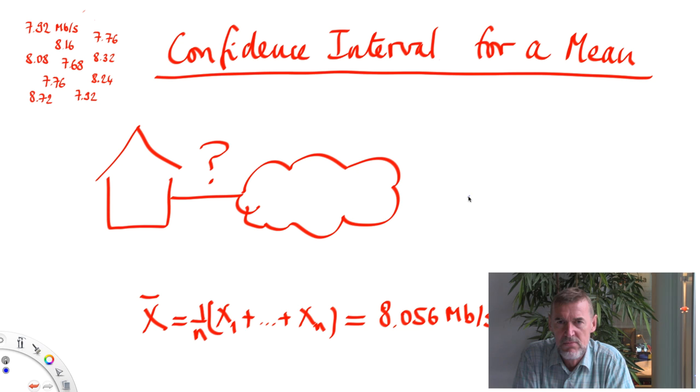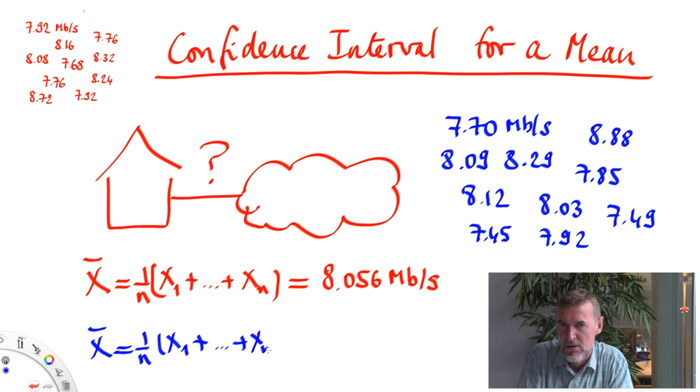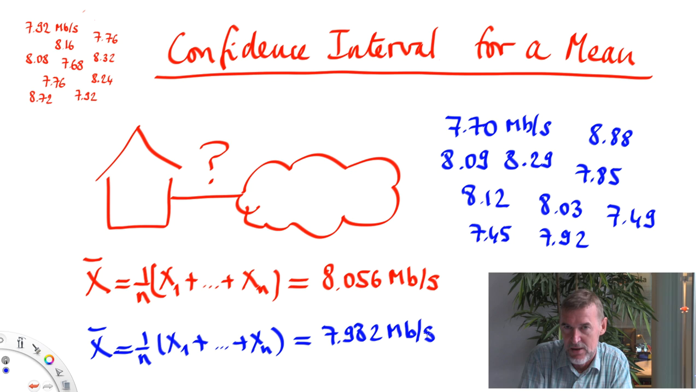If I do the experiment again in the same conditions, I find a different set of 10 numbers. We see that the result we obtain, even after computing the mean or the average, is a variable. There is some randomness in it. So the goal of the confidence interval is to quantify the uncertainty we have on this value, on the mean, that results from the fact that there is some randomness.